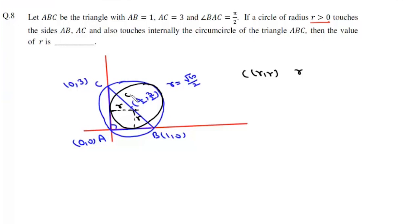If two circles touch each other internally, then C₁C₂ must equal R₁ minus R₂. So basically, C₁C₂ must equal R₁ minus R₂, and R₂ in this case is R.